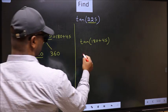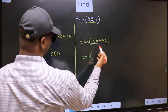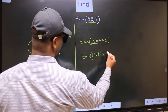Next, tan. In place of 180, now we write 1 into 180 plus 45.